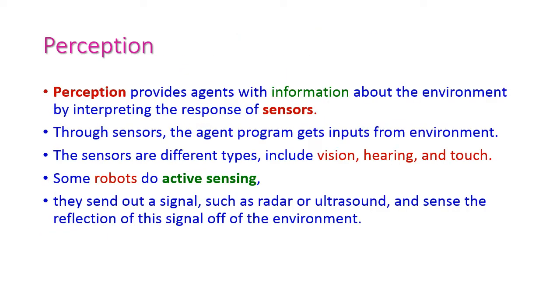What is meant by perception? Perception provides agents with information about the environment by interpreting the response of sensors. The agent is working in its own environment, and the current environment will be perceived by the agent by using sensors. Through the sensors it will accept the input from the environment.